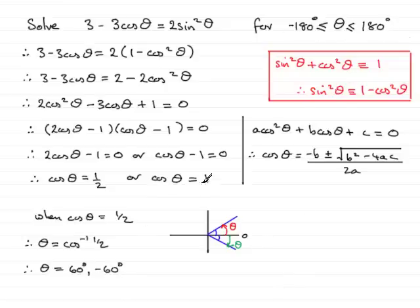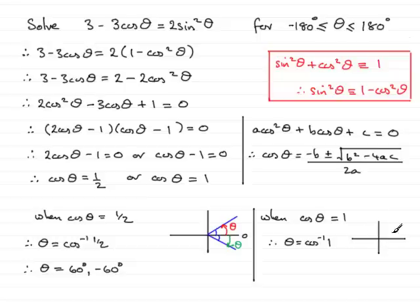What about the other one? When cos theta equals 1, let's just put this over here. When cos theta equals 1, you should really know this answer, actually. Theta would equal the inverse cos of 1. And to do this, you could use a quadrant method or a graphical method. And if we were using a graphical method, then you should know that if we're drawing the graph of y equals cos theta,